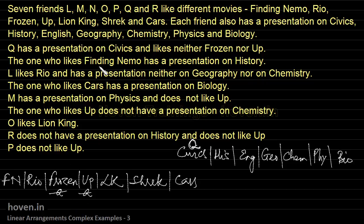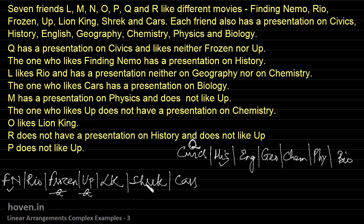The one who likes Finding Nemo has a presentation on history. This means whoever is allocated to FN will also be allocated to history — they are paired together. We use a tick mark to remind us that they are paired.